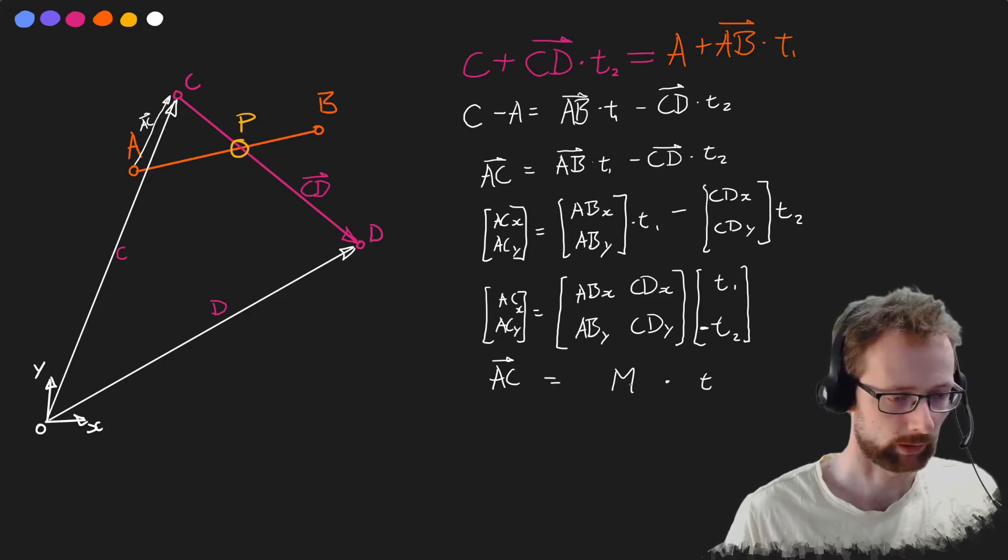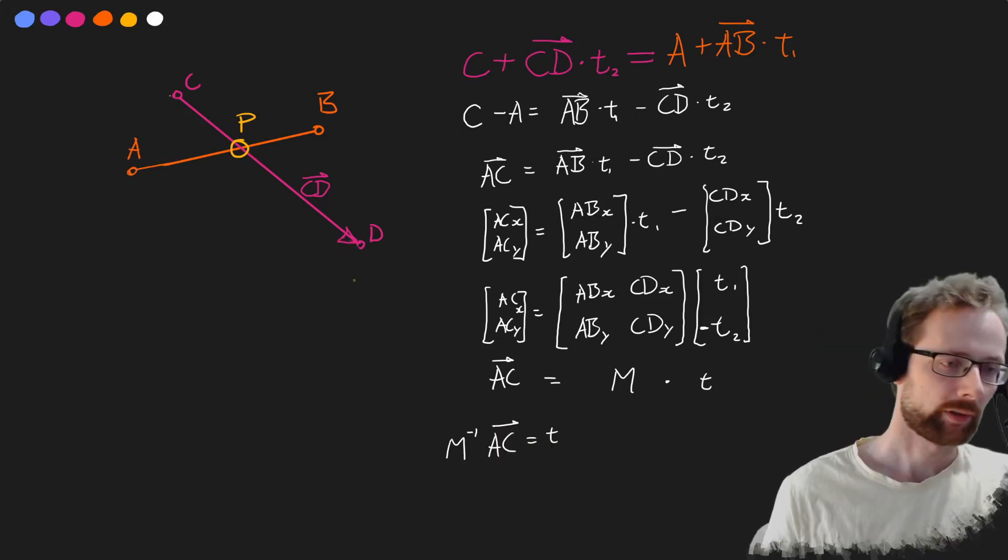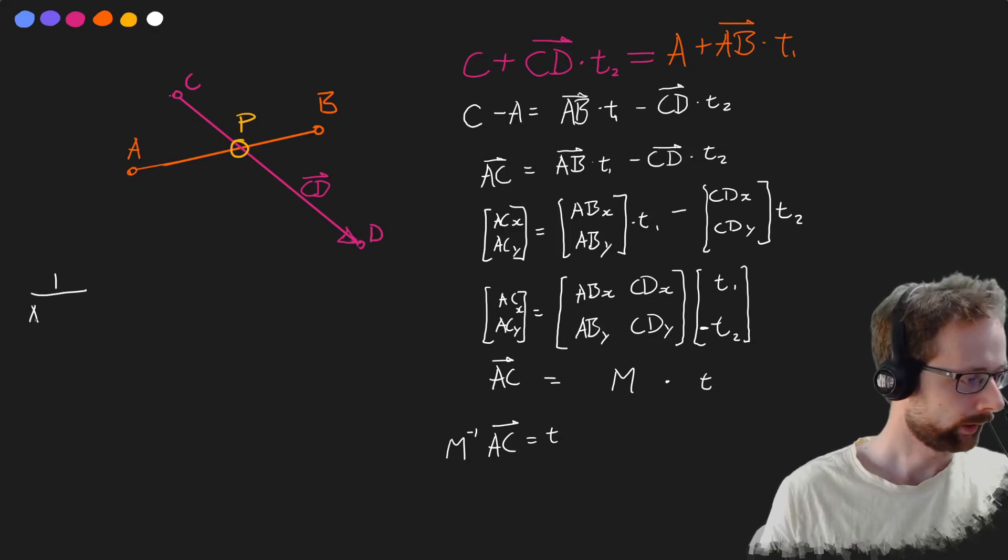You invert m so it'll be m to the negative one ac is equal to t. To find the inverse of m the cross product is equal to m.